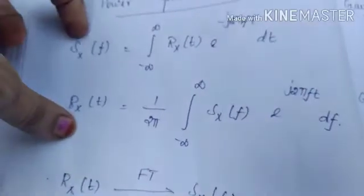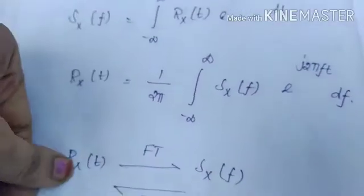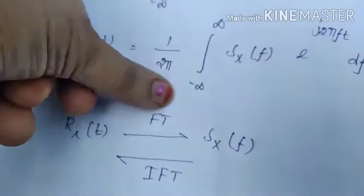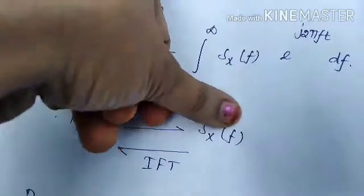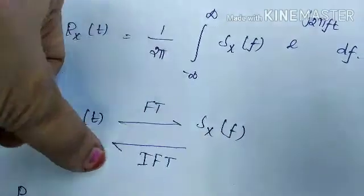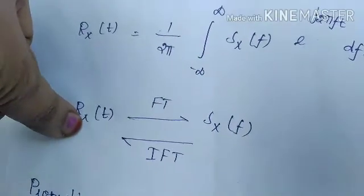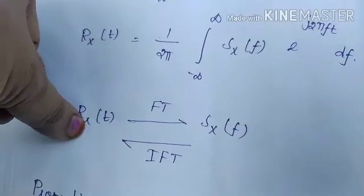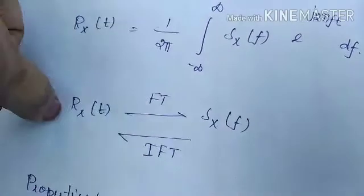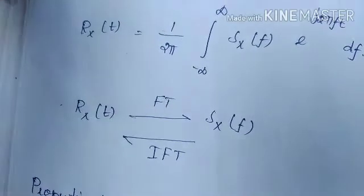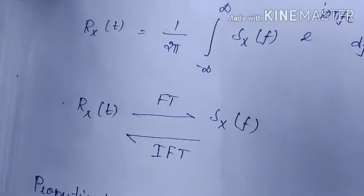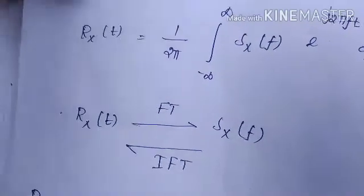From these two formulas we can observe that the autocorrelation function, after taking the Fourier transform, gives us the power spectral density. From the power spectral density, by taking the inverse Fourier transform, we can get the autocorrelation function. So by using Fourier transform and inverse Fourier transform we can find the values of Rx(τ) and Sxx(f).